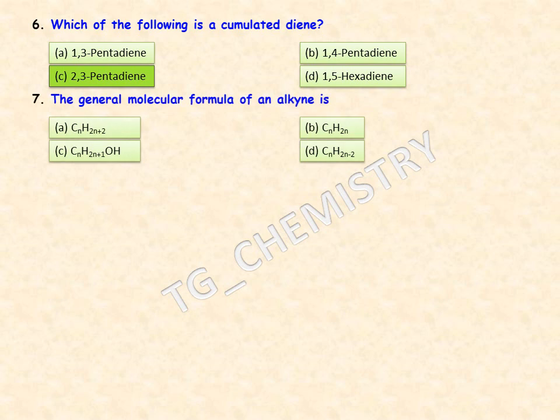The general molecular formula of an alkyne: the simplest alkyne is acetylene, HC≡CH. Looking at the options and comparing with acetylene, option D — CₙH₂ₙ₋₂ — is the correct formula for alkynes.